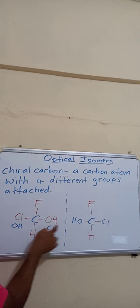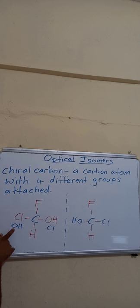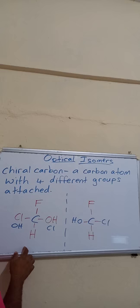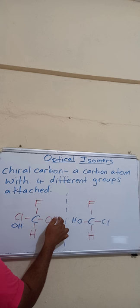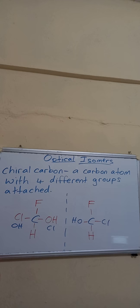It will be in line with the CL group, and the CL of this one will be in line as well. So this CL will match up with this OH, and this OH will match up with the CL. So that is what we mean by non-superimposable — the groups will not all fit perfectly.